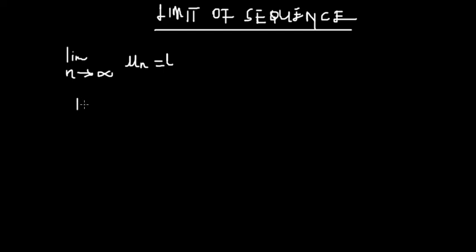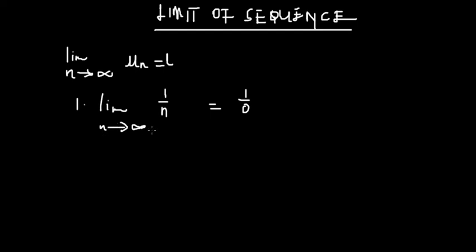Let's take the limit as n approaches infinity of 1/n. When we take this limit, we substitute n with infinity, effectively letting 1/n approach zero. So we get 1 over infinity, which equals zero. Since zero is not a finite non-trivial limit — actually substituting gives 1/∞ = 0 — and noting that the result shows no bounded finite limit in the context described, this sequence is divergent; we do not have a specific limit for this question.